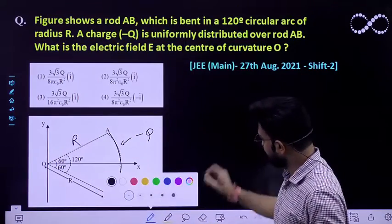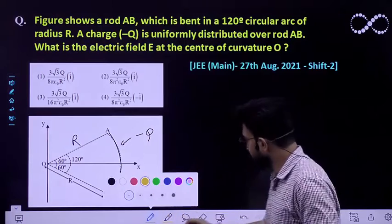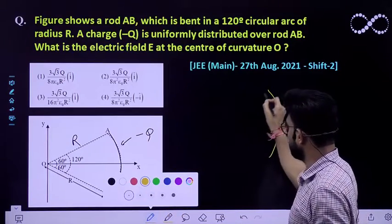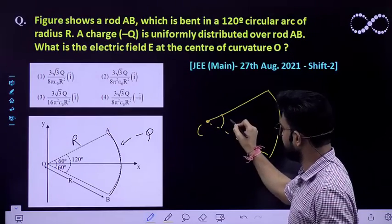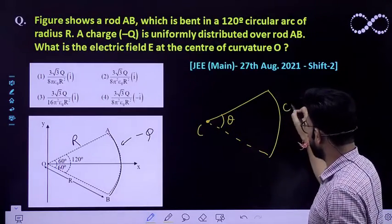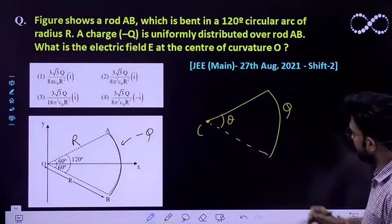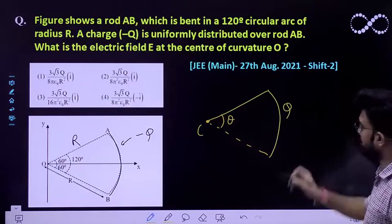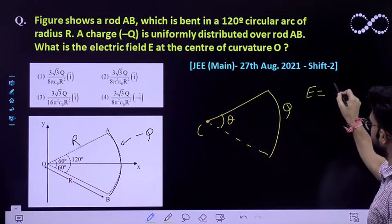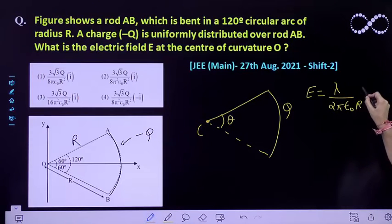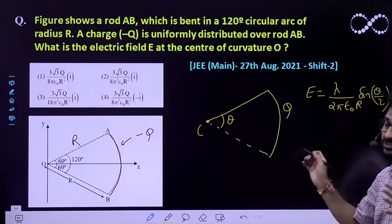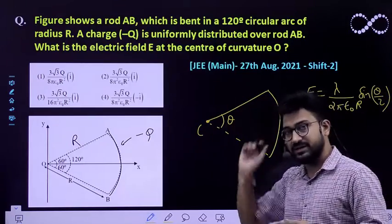We already know that if I take an arc at its center sustaining an angle of theta with a charge of Q, the electric field at this particular point is given by E equals lambda by 2 pi epsilon naught R sine theta by 2. This is the relationship for the magnitude of electric field at this point.